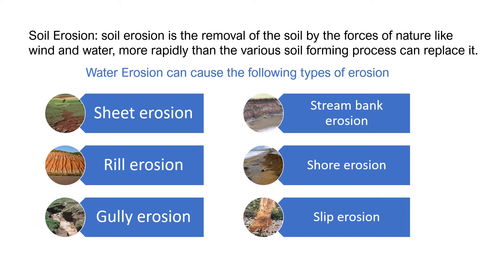However, this balance can be disturbed by both natural and human factors. Let us first take the natural factors which lead to soil erosion. Water and wind are the most important natural factors. Water erosion can cause the following types of erosion, so let us understand each of these different types separately.